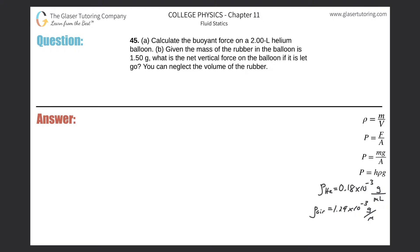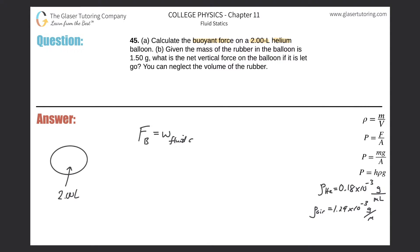Number 45, letter a: calculate the buoyant force on a two-liter helium balloon. Here's the balloon — the volume inside is going to be two liters. In order for helium to occupy this space it has to push out ambient air. The basic idea behind buoyant force — we label it F sub b — is that it's simply equal to the weight of the fluid displaced.